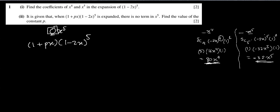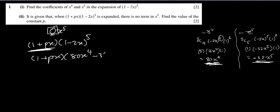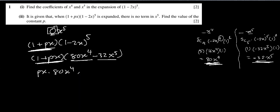We will use just two of those terms because x cubed, x squared, or x from the first factor will never combine with terms from the expansion to give x⁵ — there is no square in this part. Only these two terms are needed. So we write 1 plus px and ignore the previous terms, keeping just 80x⁴ minus 32x⁵. These are the only two which can give x⁵ in combination: px times 80x⁴ and 1 times minus 32x⁵.